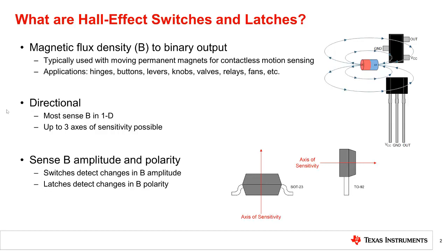Hall effect switches and latches sense different attributes of the applied B-field. Switches sense amplitude, whereas latches sense polarity. Polarity is said to be positive when the flux lines are in the direction of the axis of sensitivity. Otherwise polarity is said to be negative.